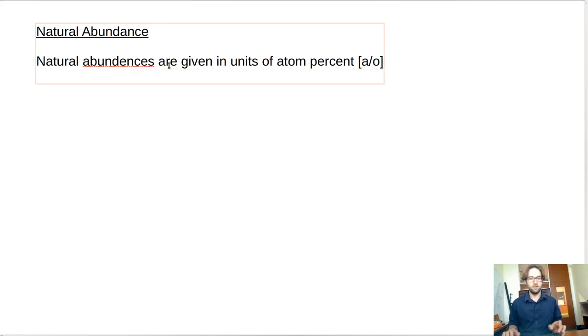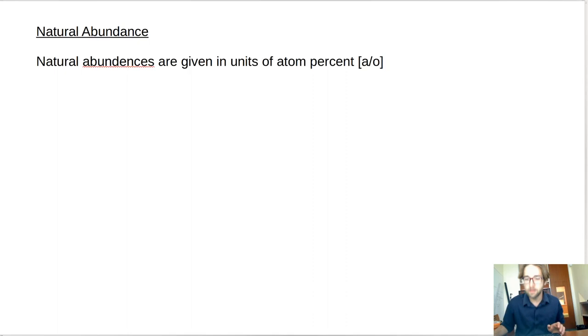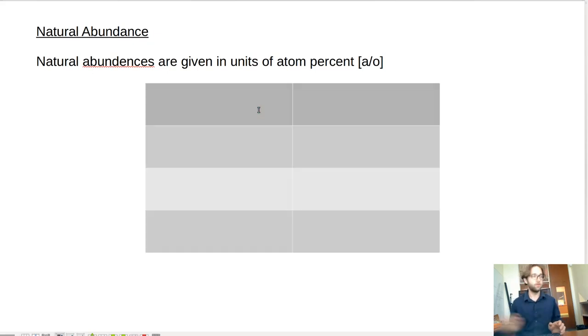And that changes. So when you talk about mixtures of carbon, you're typically talking about a particular mixture of different isotopes of carbon. And so natural abundances are typically given in units of atom percent, which we'll denote with the symbol a slash zero. It's supposed to look like a percent sign with an a on the top.